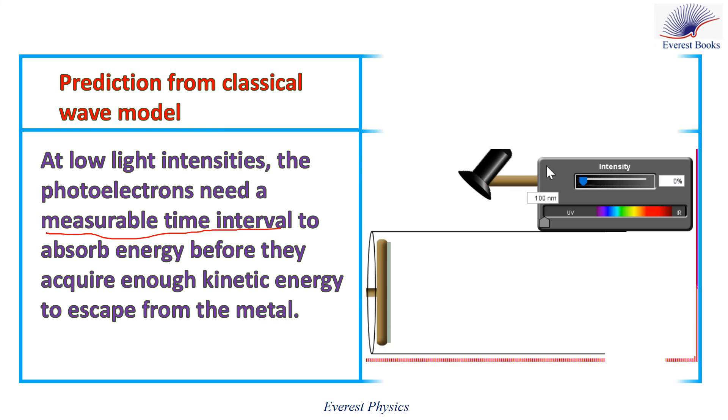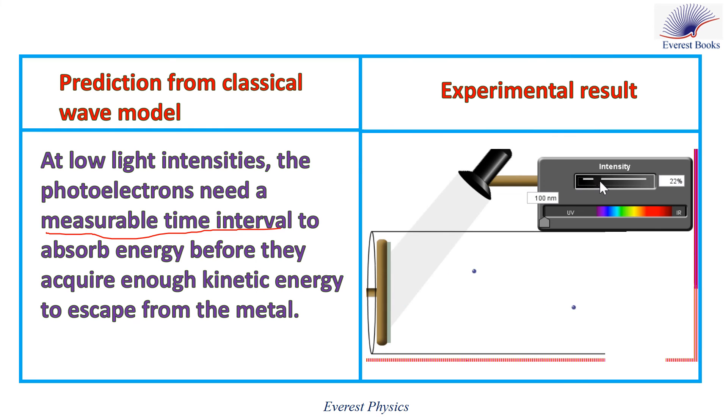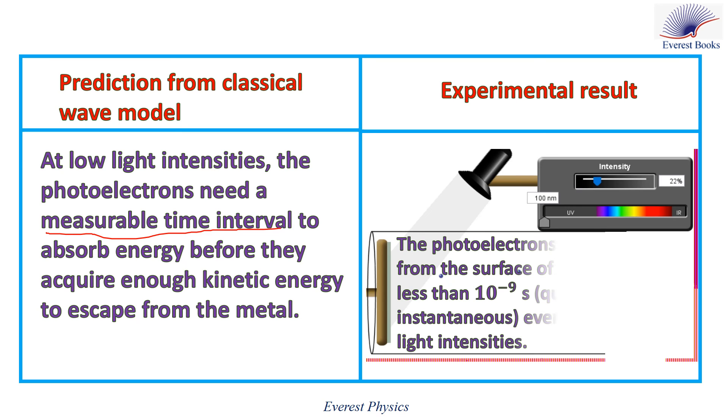Observe the experimental results. The electrons are liberated almost instantly from the surface of the metal, even at very low intensity. The photoelectrons are emitted from the surface of the metal in less than 10^-9 seconds, even at very low light intensities.